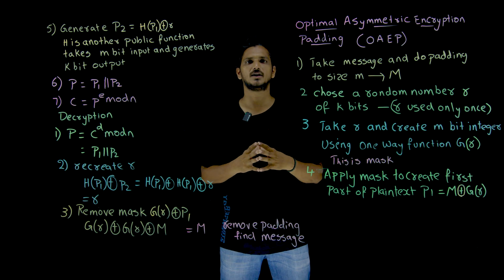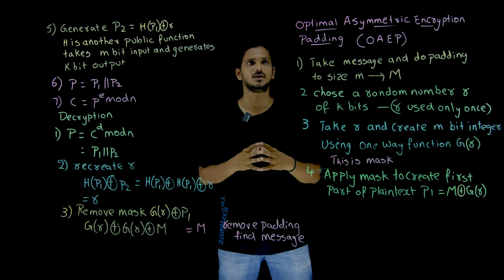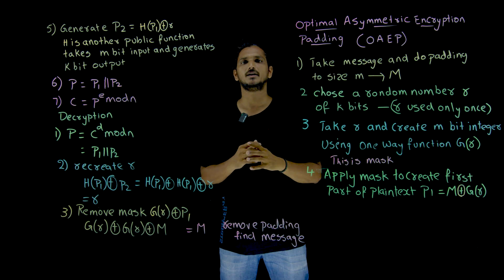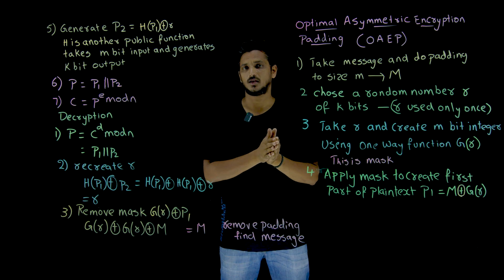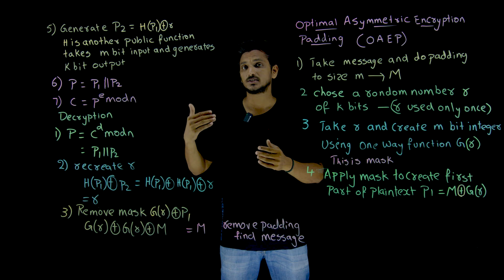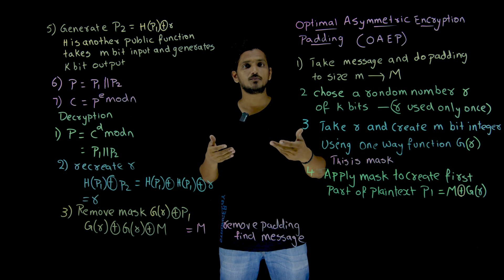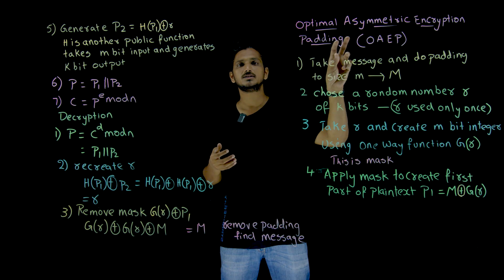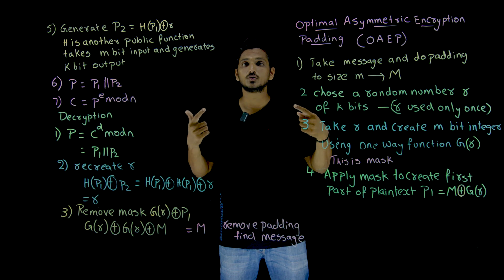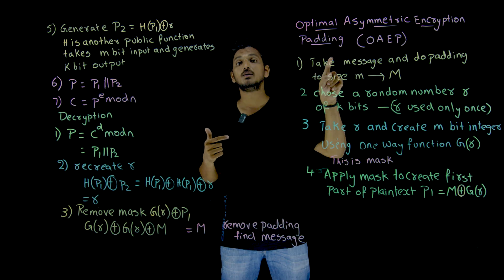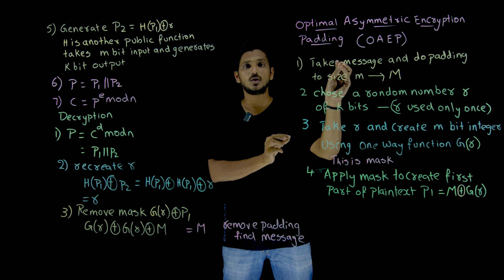Hi, welcome to Learning Monkey. I am Raghu here. In this class, we will discuss about OAEP, which means Optimal Asymmetric Encryption Padding Technique. In our last class, we clearly discussed about the attacks on RSA, where we discussed the chosen ciphertext attack and short message attack. In order to overcome those attacks, OAEP is helping us. How it overcomes those attacks will be discussed in our next class when we discuss a simple example on OAEP.